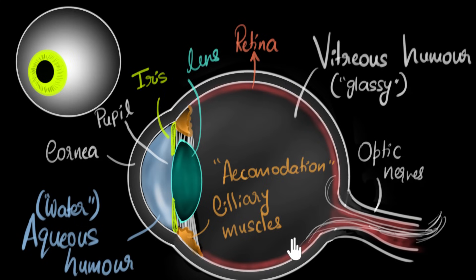So that's pretty much it. So let's quickly summarize what we learned. We saw that the cornea, the aqueous humor, and the lens together form a converging system, whose sole job is to focus rays of light onto the retina.